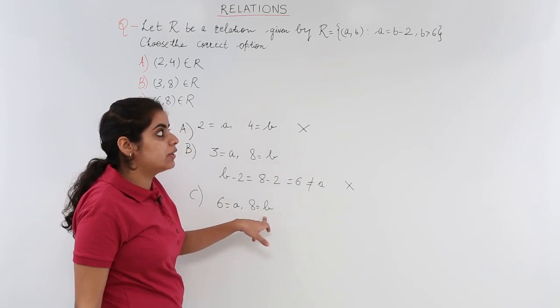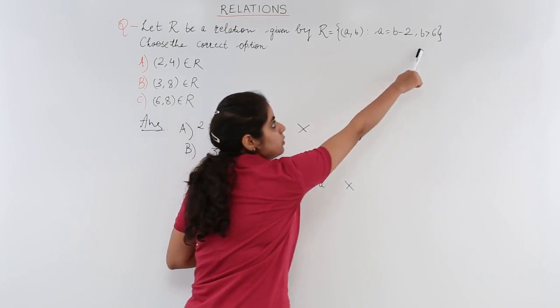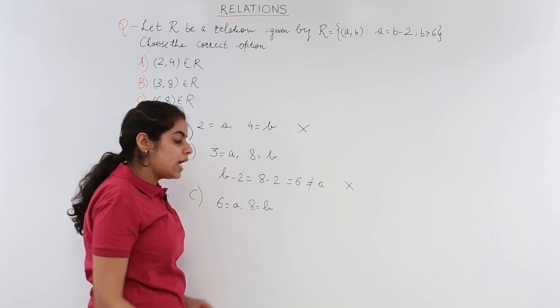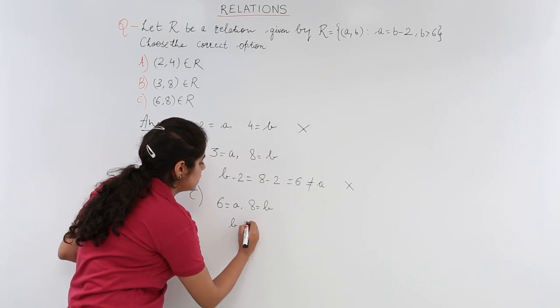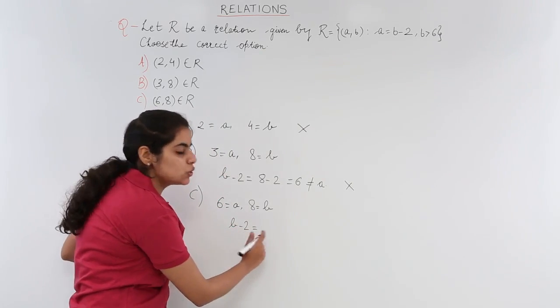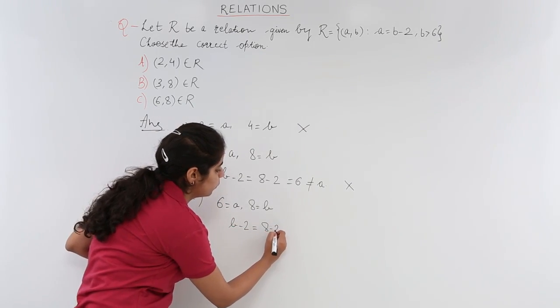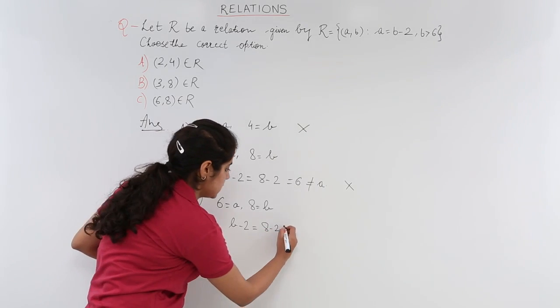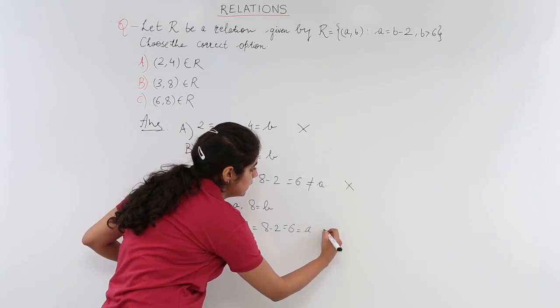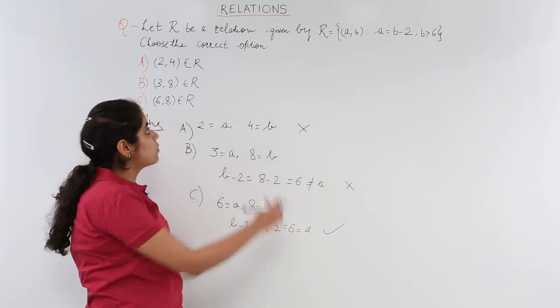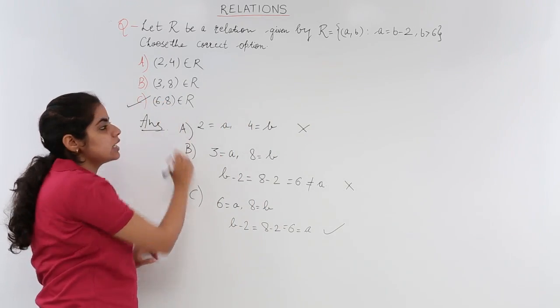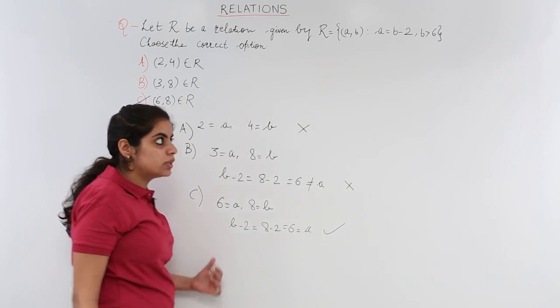Now, is b greater than 6? As per the question, b should be greater than 6. Yes, b is greater than 6. Is b minus 2 equal to a? Let's check: 8 minus 2 is 6, which is equal to a. So this is the correct option out of these three options, and hence my answer is C.